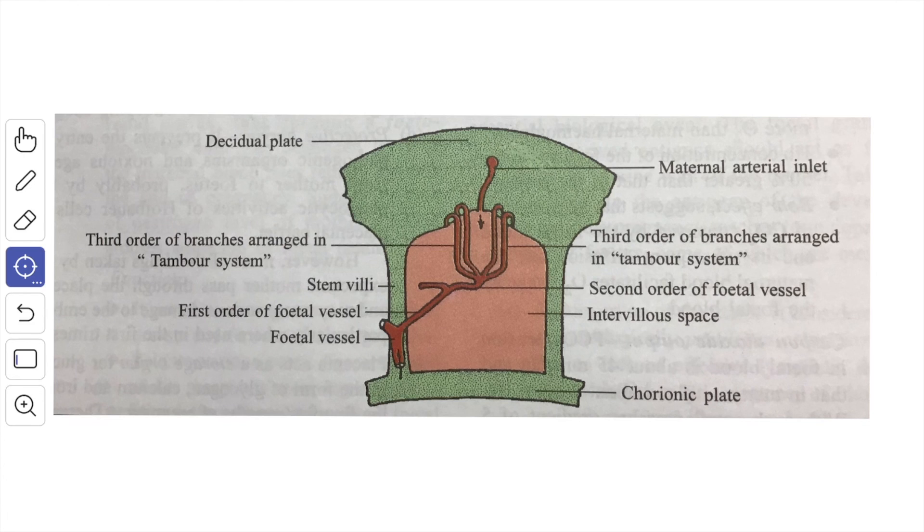The maternal and the fetal bloodstream flow side by side but in opposite direction. This counter current flow increases the surface area for the exchange of material between the mother and fetus. About 300 ml of fetal blood circulate through the chorionic villi per minute and the pressure of the fetal blood capillary is about 30 millimeters of mercury.